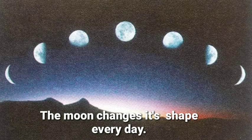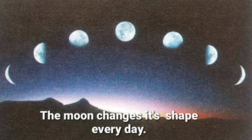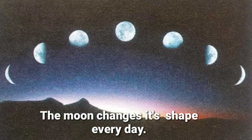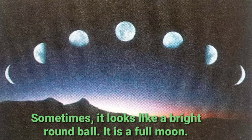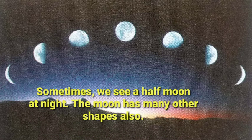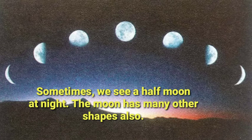The moon changes its shape every day. The moon is revolving around the earth, and earth's shadow falls on the moon depending on its position. That is why we see the moon in a different shape every day. Sometimes it looks like a bright round ball — that is called a full moon day. Sometimes we see a half moon. The moon also has many other shapes: crescent, egg, gibbous, half, and full.